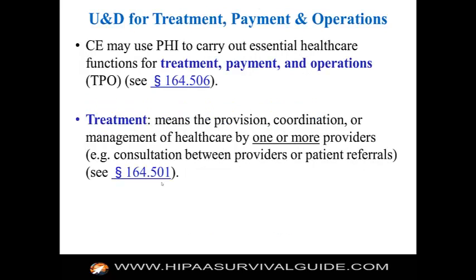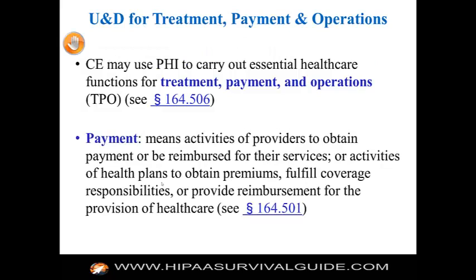A CE may use PHI to carry out essential healthcare functions for treatment, payment, and operations. Treatment means the provision, coordination, or management of healthcare by one or more providers — PHI used every day, 24/7, for treatment purposes. Payment means activities of providers to obtain payment or be reimbursed for their services, or activities of health plans. Covered entities and business associates can use PHI for the purposes of payment. There is an exception written into the omnibus rule: when a patient pays out of pocket in full, they have the right to request the restriction that the PHI not be forwarded to any other covered entity such as an insurance provider, and covered entities are required to honor this restriction.